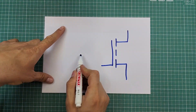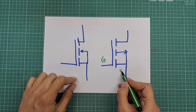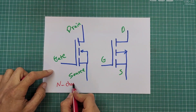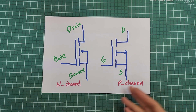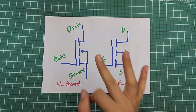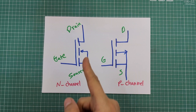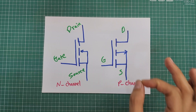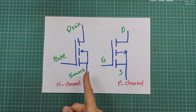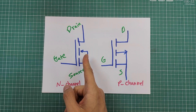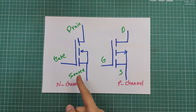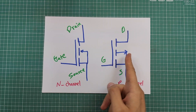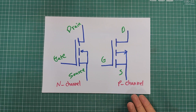MOSFETs are another kind of transistor with different characteristics. These are schematic symbols of MOSFETs — they have three terminals: gate, drain, and source. This is an N-channel and this one is a P-channel MOSFET. Like in BJTs, there is an arrow in the MOSFET schematic symbol, and the arrow is always connected to the source terminal. If the arrow is inward, the MOSFET is N-channel; if the arrow is outward, it is a P-channel MOSFET.